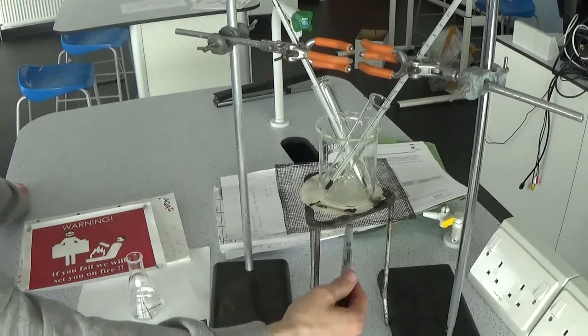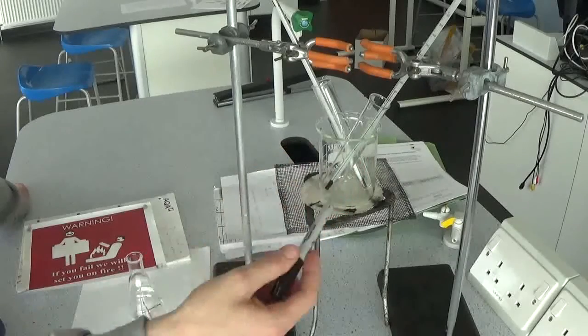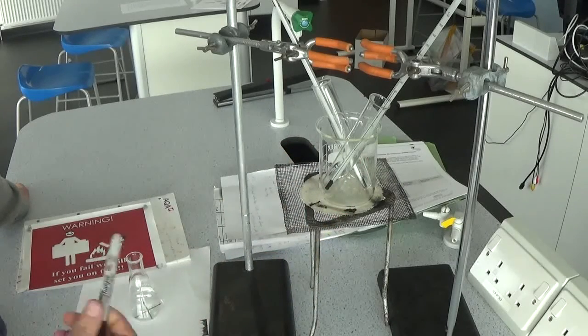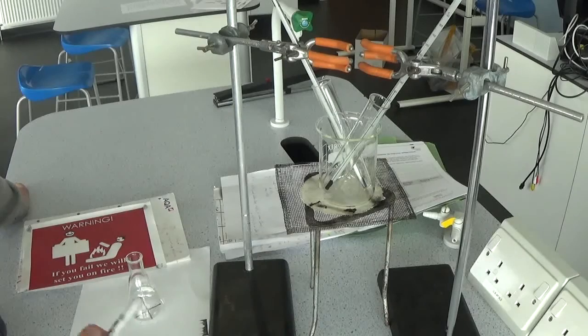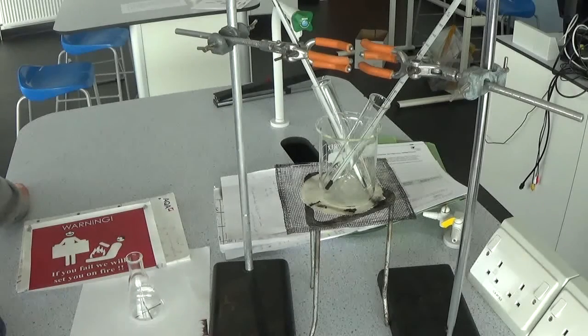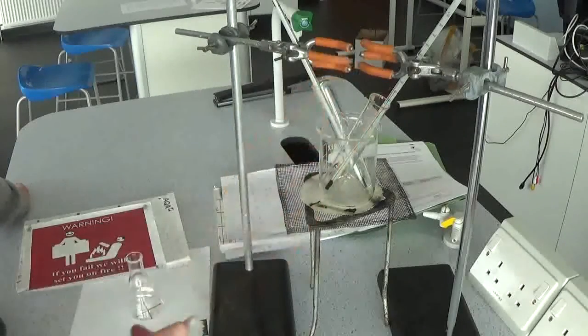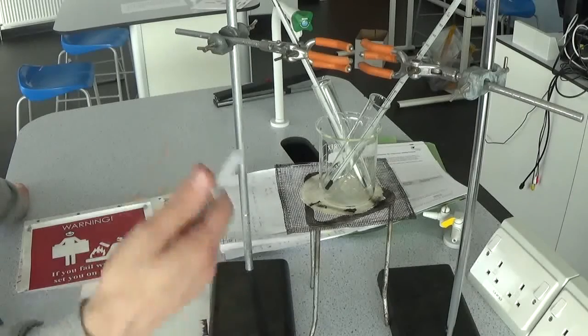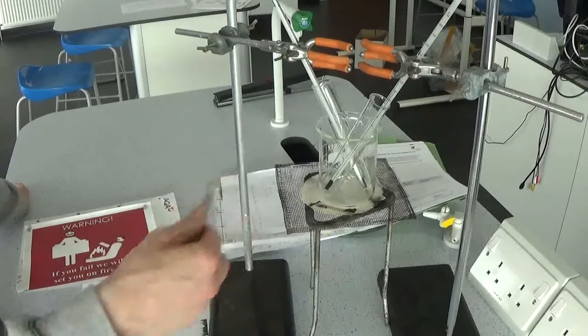You'd have a Bunsen under here. You would heat your solution up until the appropriate temperature - 25, 35, 45, 55. You don't have to be exact, so if you get to 50 and you're a bit bored, you can take it out and do it then, as long as you've got a few readings.